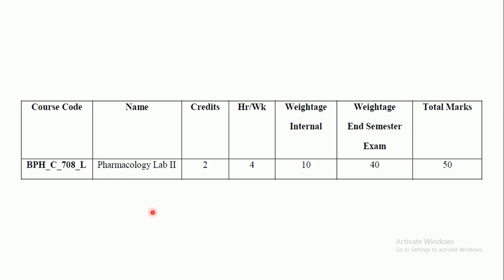Before going into the details of the syllabus, this is the weightage which is given to this particular subject, which has the code BPHC 708L — that is a laboratory subject. The credits allotted for this subject are 2. For a practical, credits are calculated by multiplying the number of hours by half, so clearing this course gives you a credit point of 2.